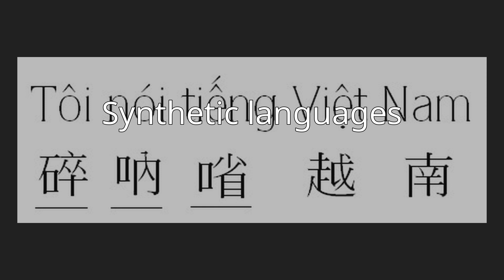Most Indo-European languages are moderately synthetic. There are two subtypes of synthesis, according to whether morphemes are clearly differentiable or not. These subtypes are agglutinative and fusional — or inflectional, or flexional in older terminology.